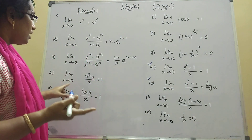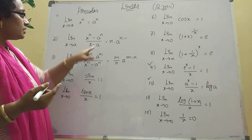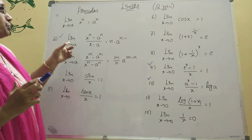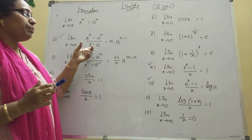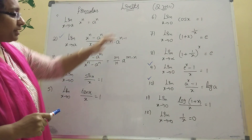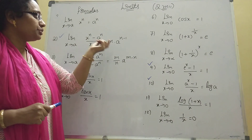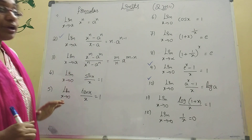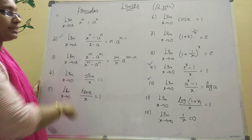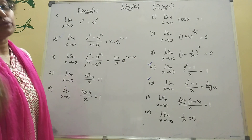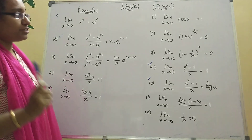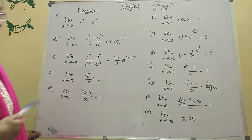One more trick: mostly use this formula — limit x tends to a, x power n minus a power n by x minus a equals n into a power n minus 1. This is very commonly used. You should take a screenshot of these formulas — they are very important. Once you know these formulas, the four-mark problems will be in your pocket. This applies for both Andhra Pradesh and Telangana students.